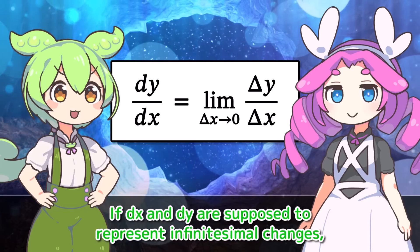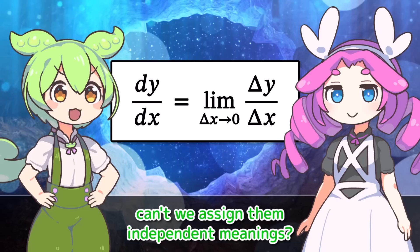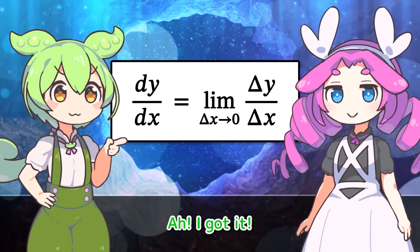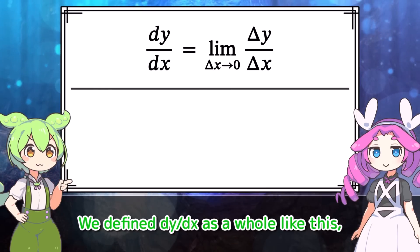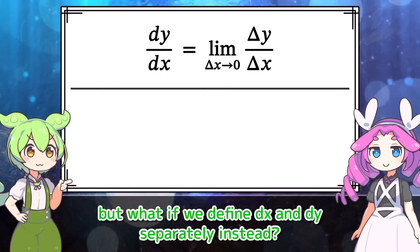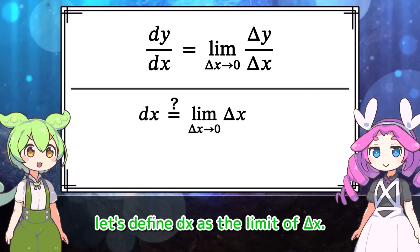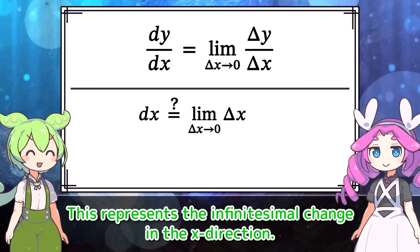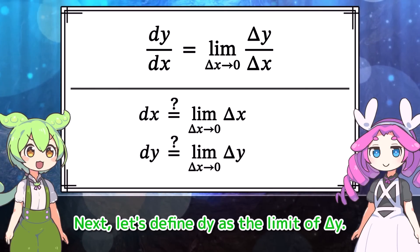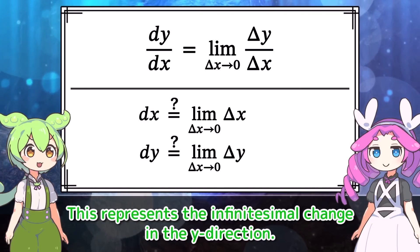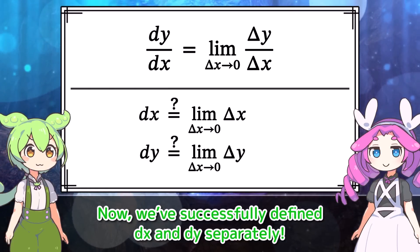It makes me feel restless. If dx and dy are supposed to represent infinitesimal changes, can't we assign them independent meanings? I've come up with a great idea. We define dy by dx as a whole, but what if we define dx and dy separately instead? Since dx corresponds to delta x, let's define dx as the limit of delta x — representing the infinitesimal change in the x direction. Next, let's define dy as the limit of delta y — representing the infinitesimal change in the y direction. Now we've successfully defined dx and dy separately.